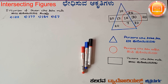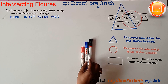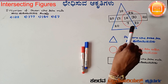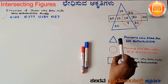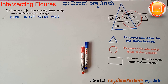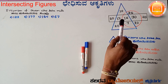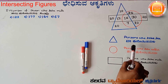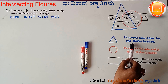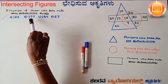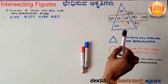Dear students, today we have solved the questions about the Intersecting Figures. They have given some diagrams and rules related to these diagrams. We have to count the number of persons or number of terms given here.